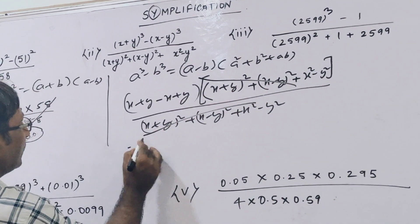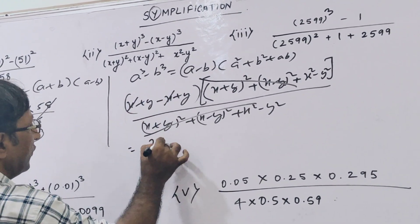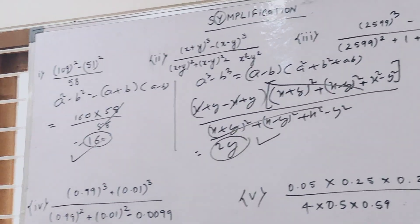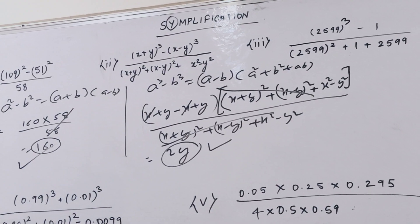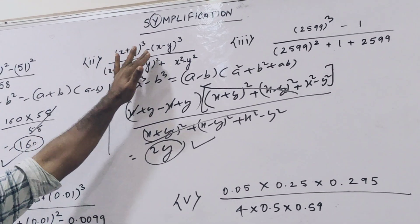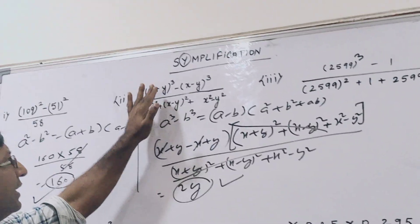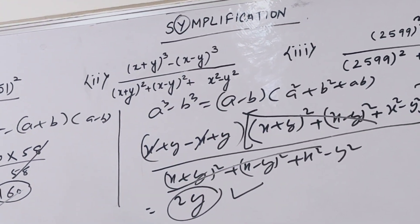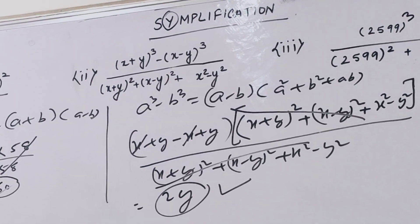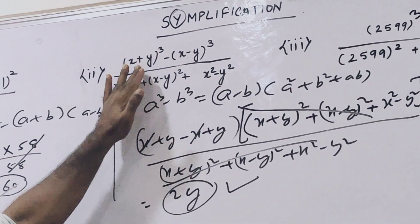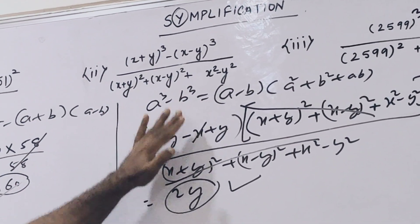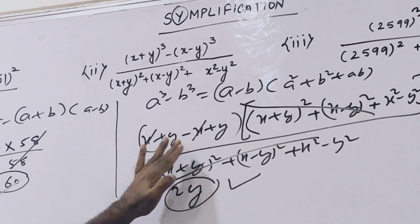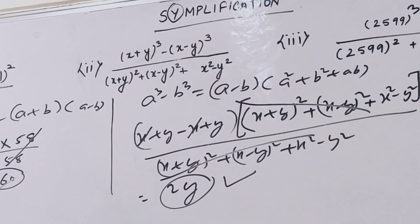So your answer is what? The (x+y) squared and (x-y) squared cancel out, and x and x cancel out. Your answer is 2y. So you can solve this question just by watching it. Using a cubed minus b cubed equals (a-b) into (a squared plus b squared plus ab), the denominator cancels, and the answer is 2y.